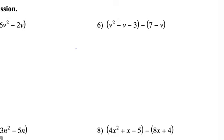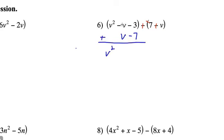Here's another subtraction problem. I'm going to add the opposite of everything in the second binomial — changing the subtraction to addition, the 7 becomes negative, and the negative v becomes positive v. Now we have an adding problem. Line up the like terms: the negative 7 lines up under the negative 3, and we have positive 1v. The v squareds just tag along, the v's cancel because negative 1v plus positive 1v equals 0v, and negative 3 plus negative 7 is negative 10. So the difference is v squared minus 10.